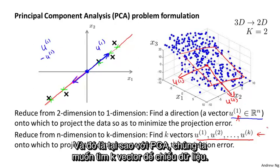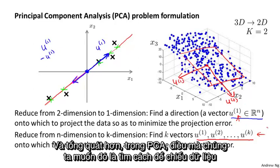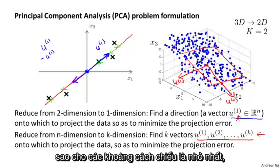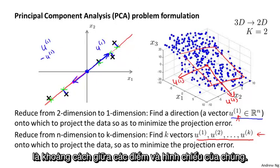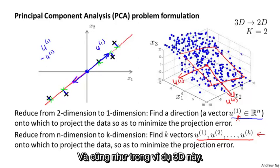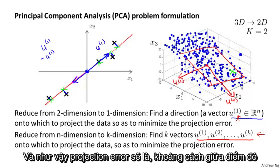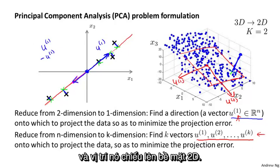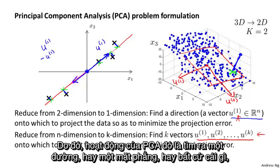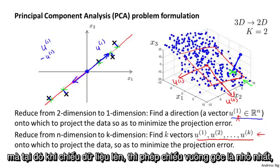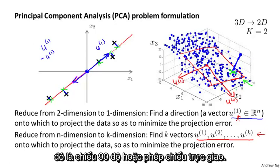That's why for PCA we want to find k vectors onto which to project the data. More formally, we want to find a way to project the data so as to minimize the projection distance — the distance between the points and their projections. In this 3D example, given a point, we take it and project it onto the 2D surface. The projection error is the distance between the point and where it gets projected onto the 2D surface. PCA tries to find the line, plane, or surface onto which to project the data to minimize the squared orthogonal projection error.